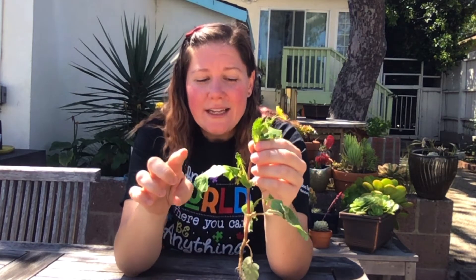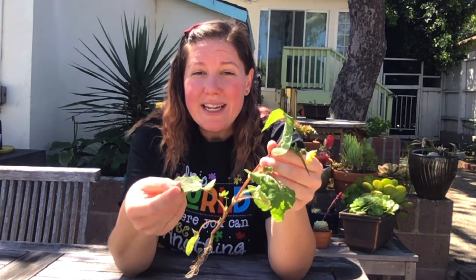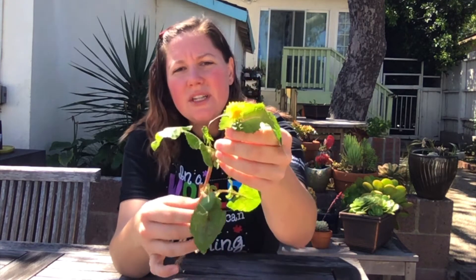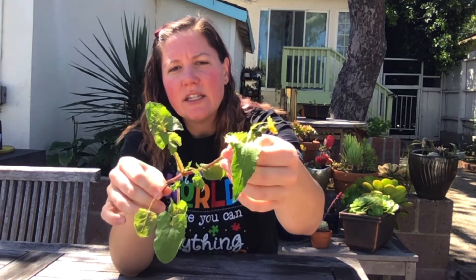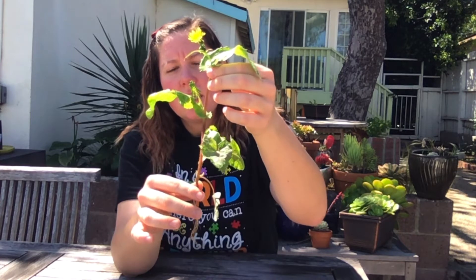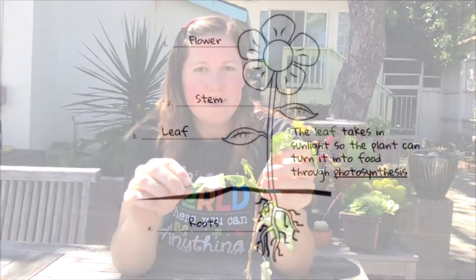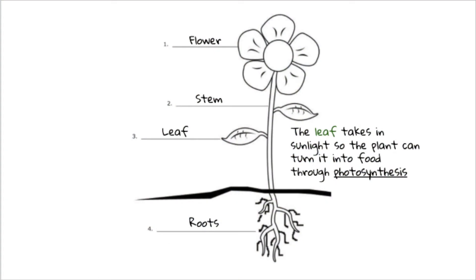Hanging off of our stem are our leaves. You can see that they're green — one of our first observations about plants. They're hanging off the stem and they're kind of big and pretty flat. Well, that makes them the perfect shape to help them do exactly what they need to do. The leaf takes in sunlight so the plant can turn it into food through photosynthesis. Big, wide leaves means absorbing more sunlight and the plant can make more food.